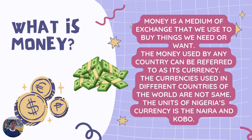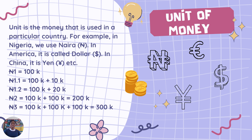Every country uses money, but money is called different things in different countries. The different names of money is what we refer to as currency. Now, in my country Nigeria, we call money Naira — the currency is Naira and Kobo. If you go over to the United States, they have what they call dollars. Some people use pounds. We have yen for China. We have euro. So every country around the world uses money, but we have different names that we call money — so many currencies. So in Nigeria, the currency is called Naira and Kobo.